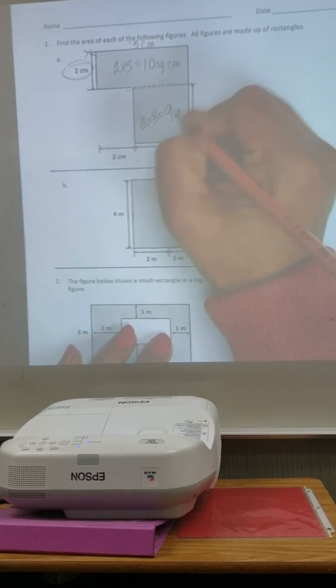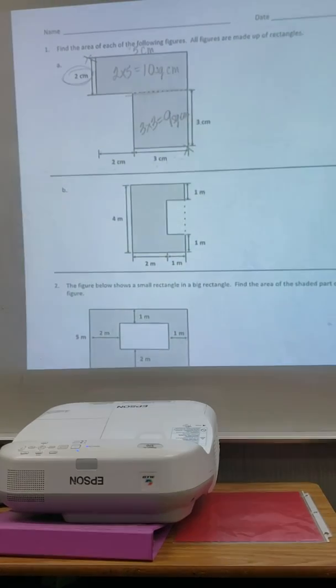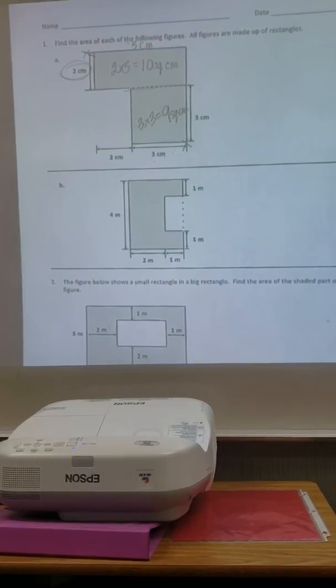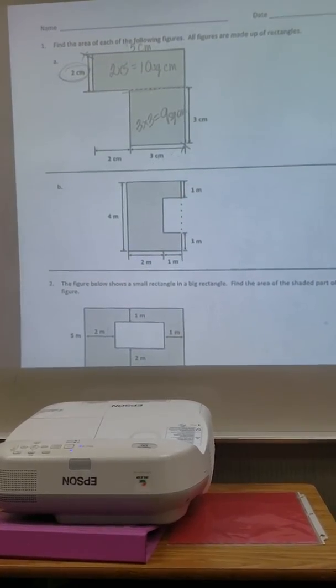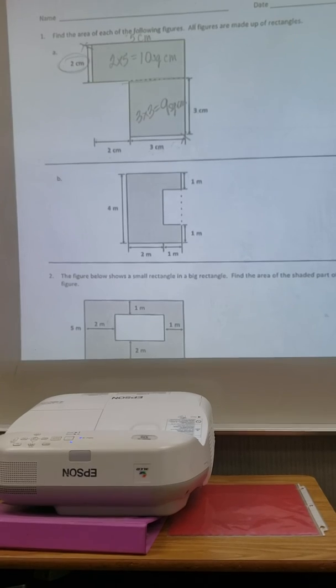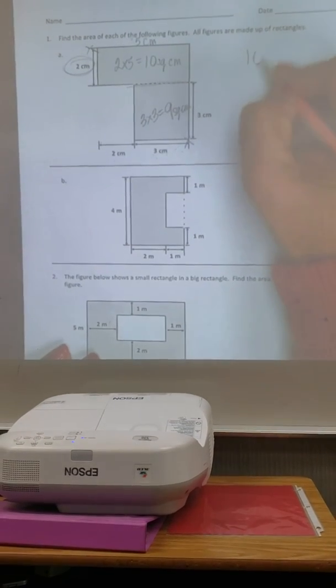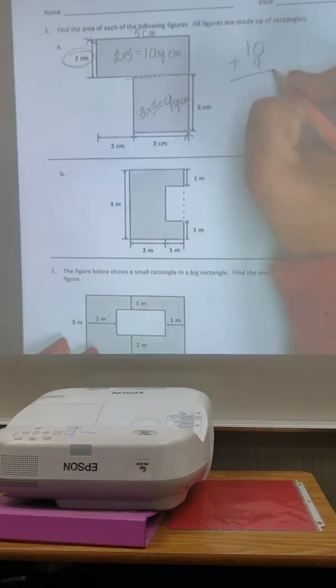I'm done? No. What do I need to do? What's the last little part I have to do? Add. I have to add the two areas together. So I know that's 10 plus 9. What does that equal? 19.